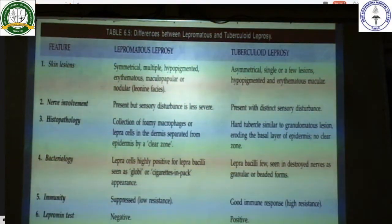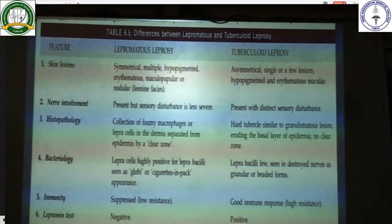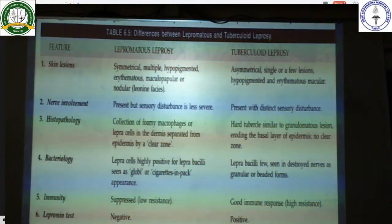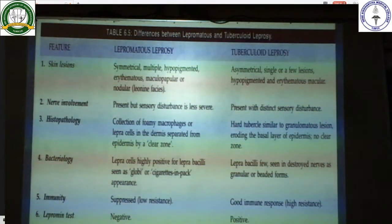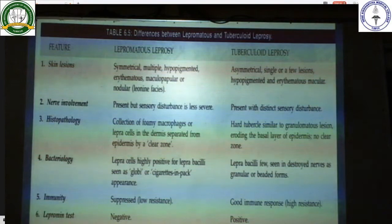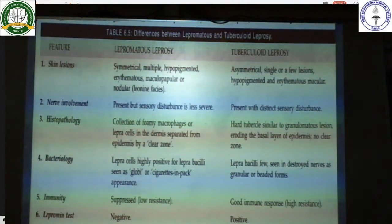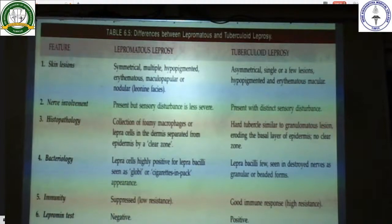This is the table to differentiate between lepromatous and tuberculoid leprosy. In lepromatous leprosy, skin lesions are symmetrical, multiple and hypopigmented; in tuberculoid leprosy, they are asymmetrical, single or fewer, hypopigmented and erythematous. Nerve involvement is present in both, but sensory disturbance is absent in lepromatous and distinct in tuberculoid leprosy. Histopathologically, lepromatous leprosy shows foaming macrophages with lepra cells separated from the epidermis by a clear zone; tuberculoid leprosy shows hard tubercle-like granulomatous lesions eroding the basal layer with no clear zone. Bacteriologically, lepra cells are highly positive for lepra bacilli in lepromatous leprosy, while in tuberculoid leprosy bacilli are few. Immunity is low in lepromatous and good in tuberculoid leprosy; lepromin test is negative in lepromatous and positive in tuberculoid leprosy.